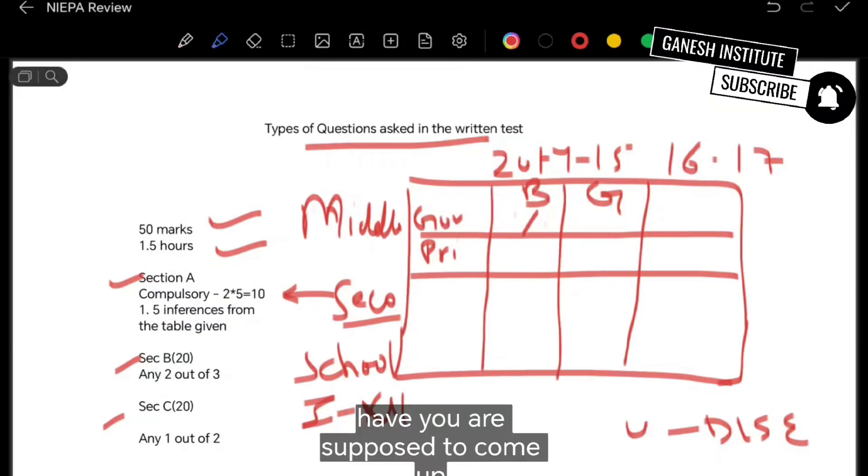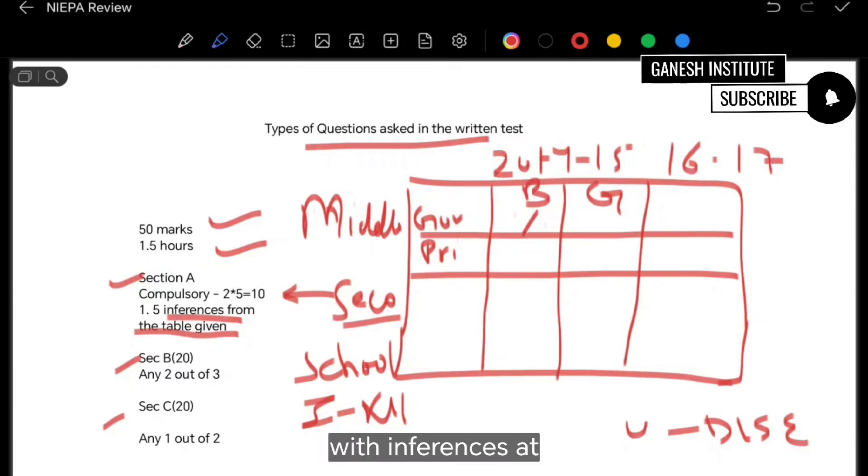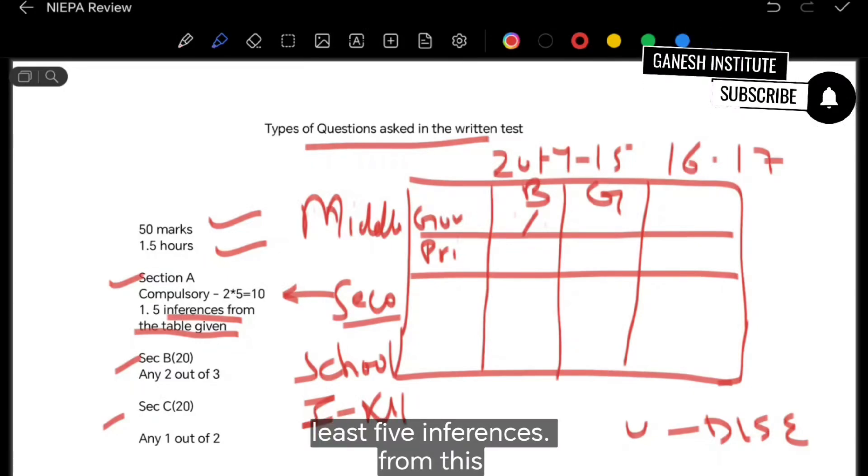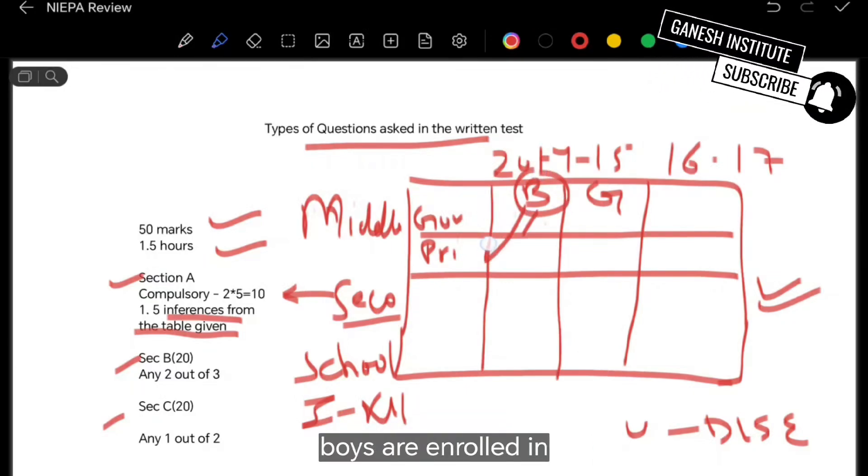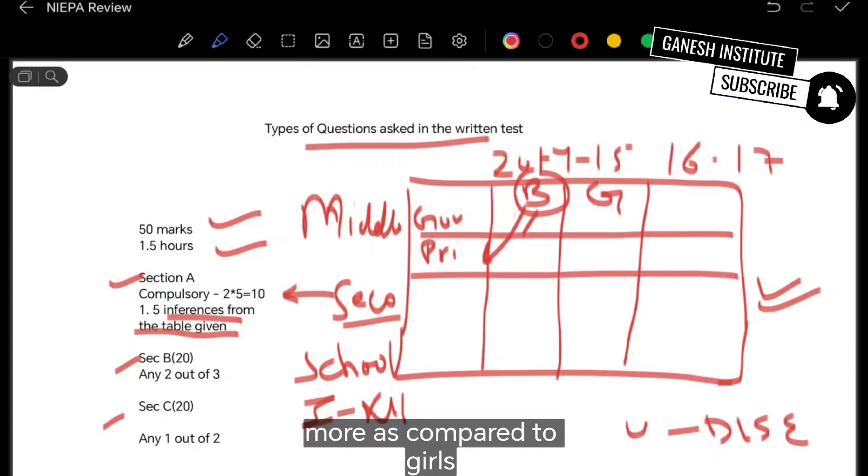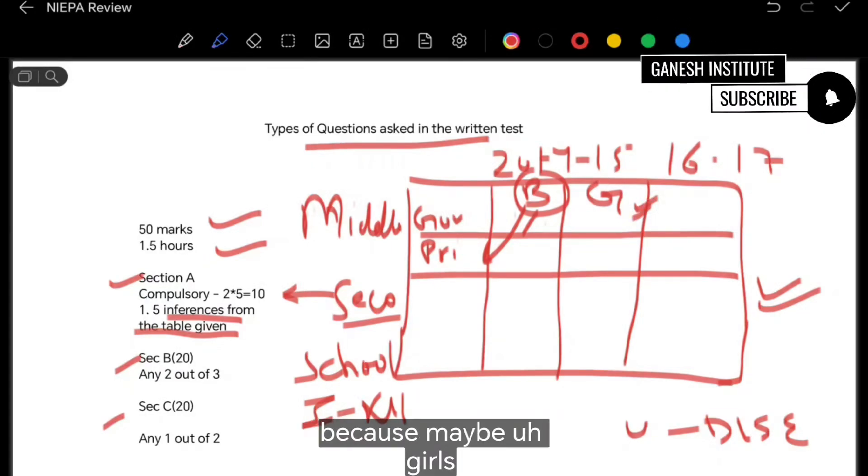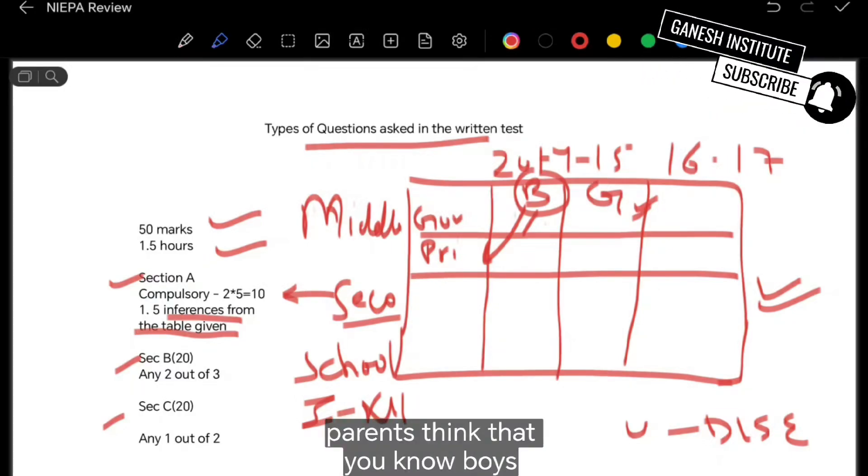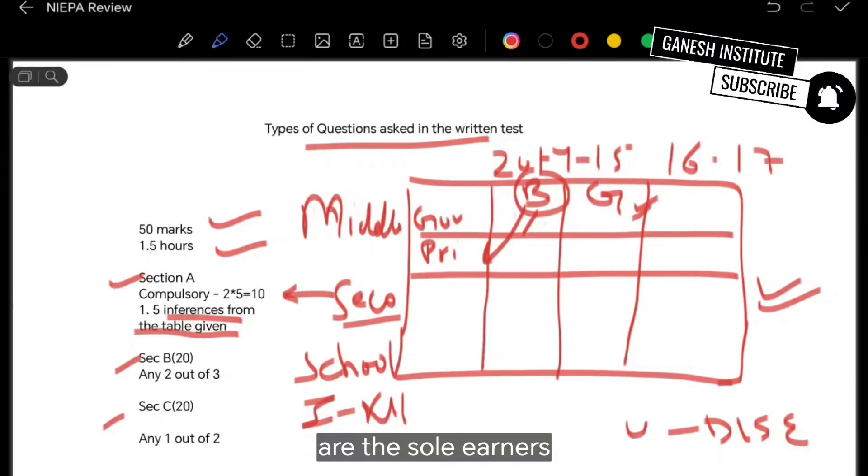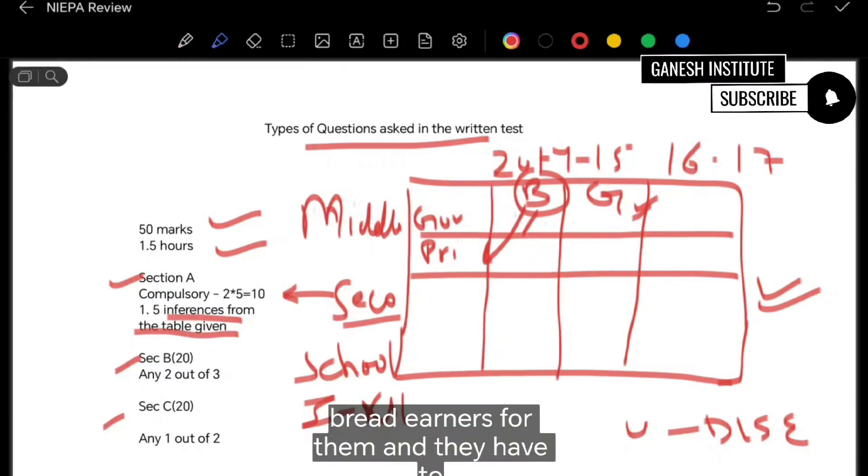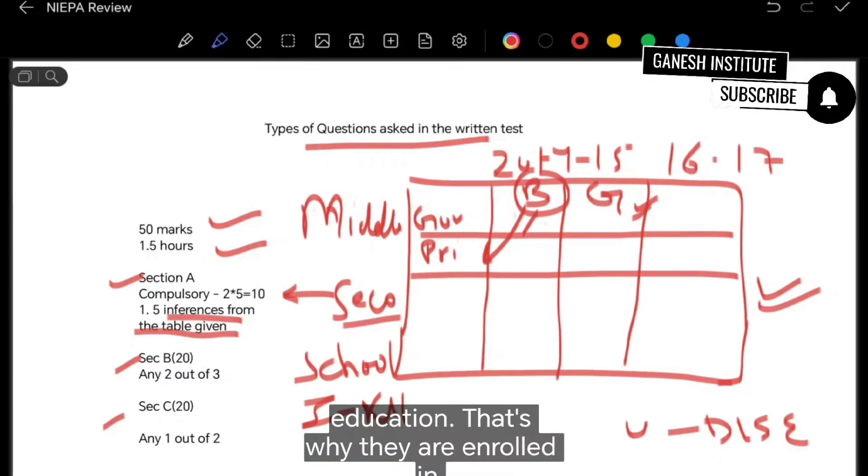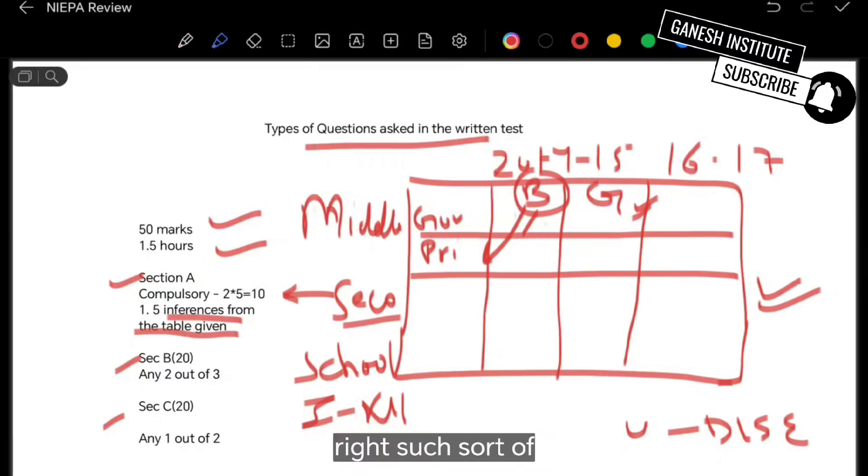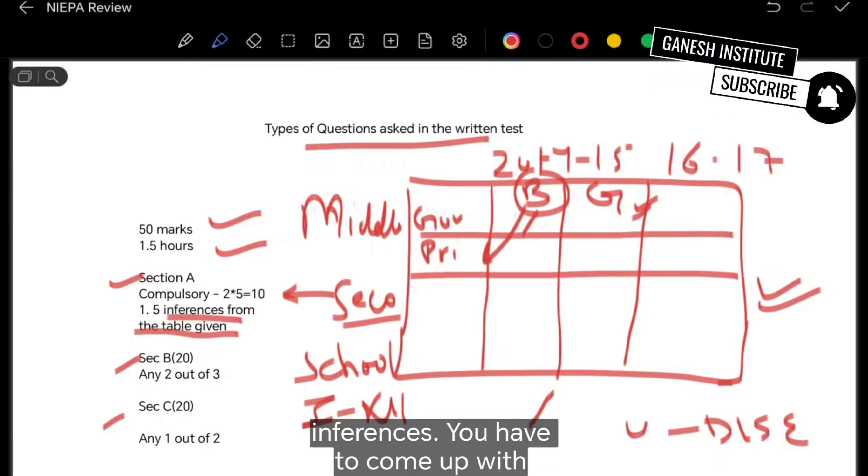And you are supposed to come up with inferences, at least five inferences from this table. For example, you could have said that boys are enrolled in private schools more as compared to girls, because maybe girls are not given that much support. And parents think that boys are the sole earners for them, and they have to be provided with good quality education. That's why they are enrolled in private because they have this belief that private institutions provide quality education.